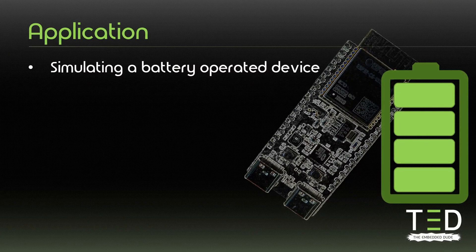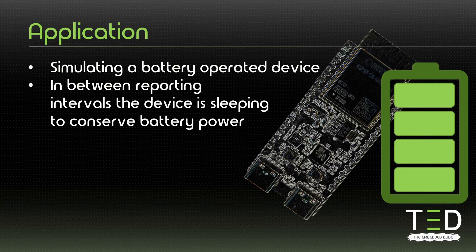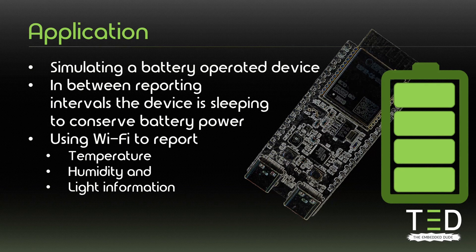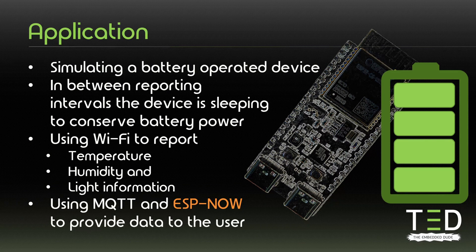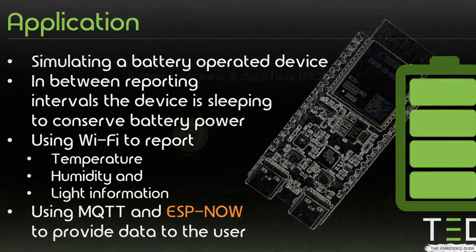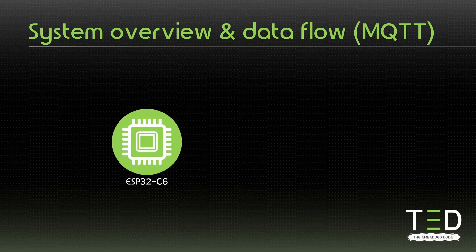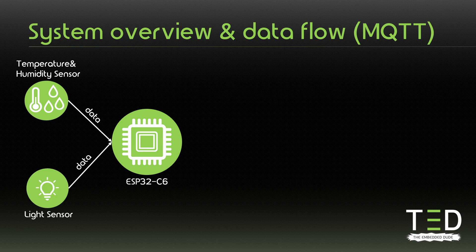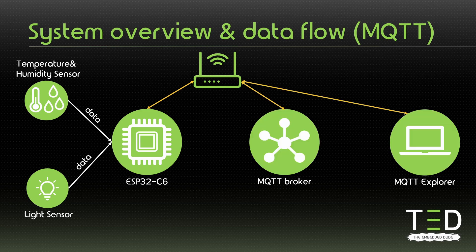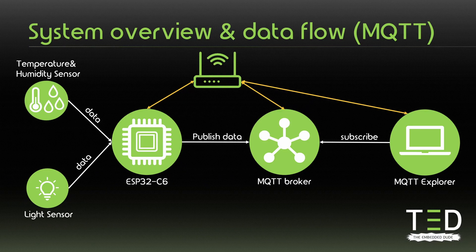As in the previous video we are simulating a battery operated device. In between the reporting intervals the device is sleeping to conserve battery power. We are using Wi-Fi to report temperature, humidity and light information which we are reading from sensors. We are comparing using MQTT and ESPNOW to provide the data to the user. Using MQTT the data flow looks like this: the ESP32C6 collects the data from the sensors via I2C, connects as a station to a Wi-Fi access point, then connects to the MQTT broker and publishes the data. With an MQTT explorer I can connect to the MQTT broker and subscribe to the topics and receive the data.